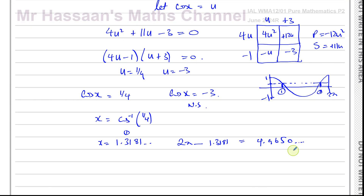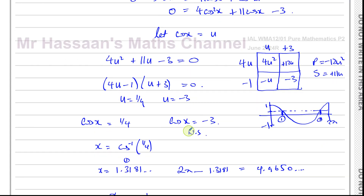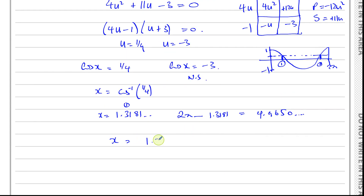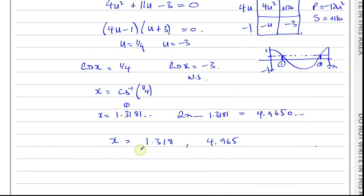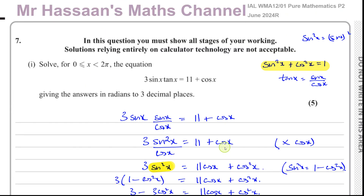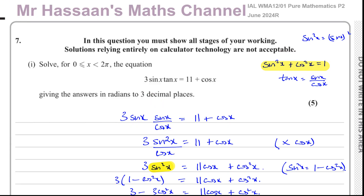So here we have the two answers, both within the range zero to two pi. Remember two pi is about 6.28, so other answers obtained by adding two pi would fall outside the range. Rounding to three decimal places, the final answers are x equals 1.318 and x equals 4.965. That solves question seven, part one — one type of trig equation.